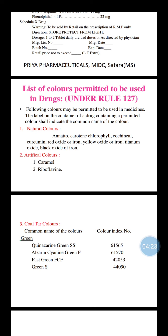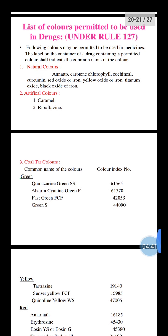Natural colors include: Annatto, Carotene, Chlorophyll, Cochineal, Curcumin, Red Oxide of Iron, Yellow Oxide of Iron, Titanium Oxide, and Black Oxide of Iron. Artificial colors include Caramel, Red, and Flamingo. These are the artificial colors used in formulations.